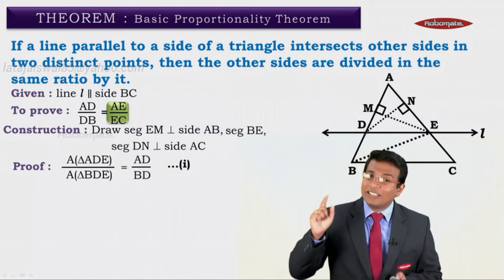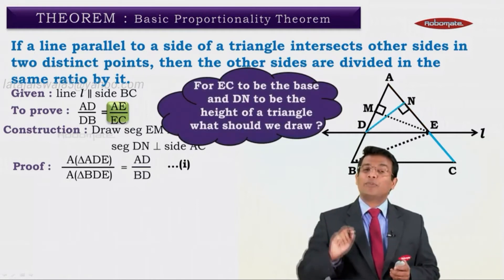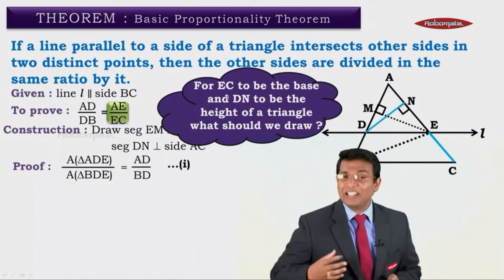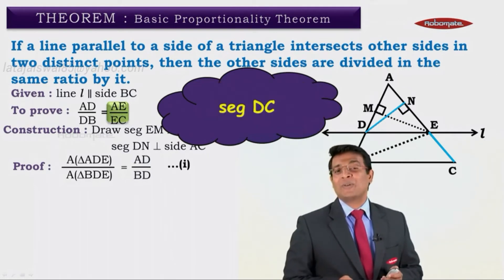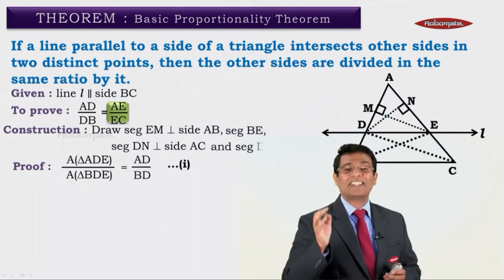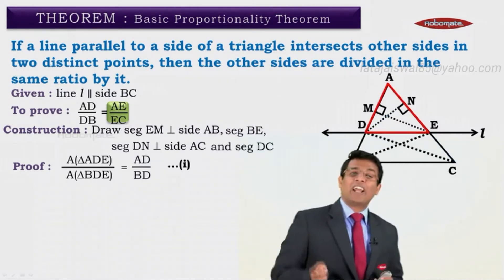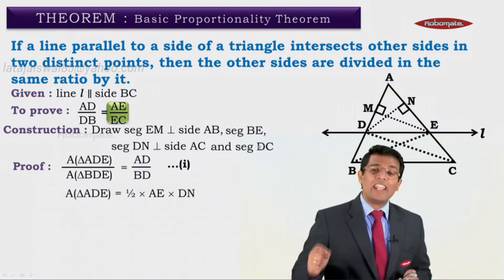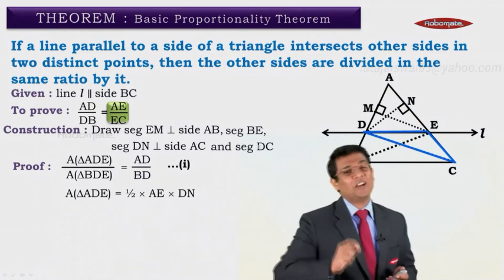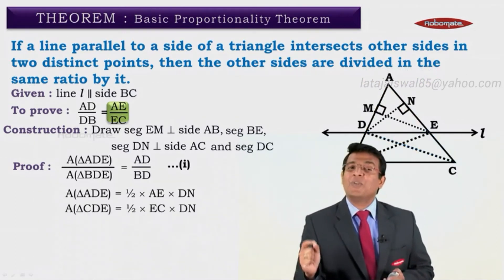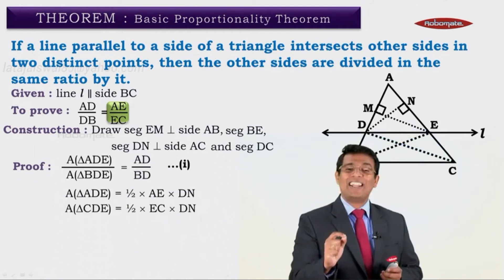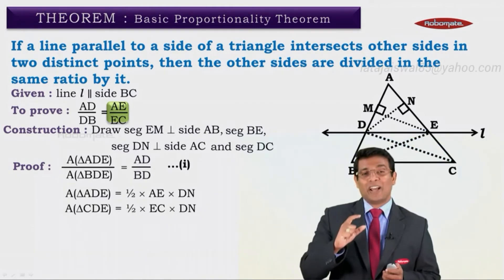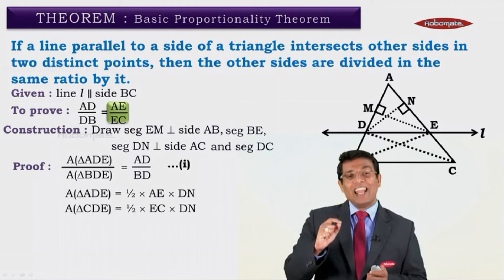In the same way, for EC to be the base and DN to be the height of another triangle, we need to draw segment DC — and that is the next construction we write. So now we know the two triangles. For triangle ADE, the area is half times AE times DN. For the next triangle, the area is half times EC times DN.